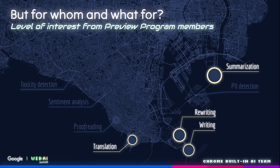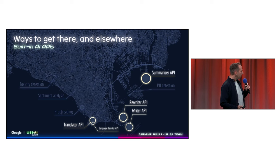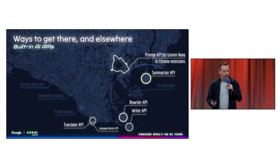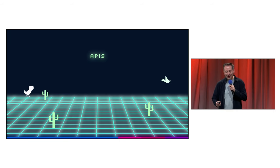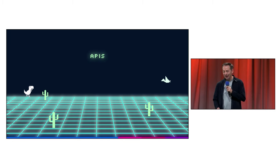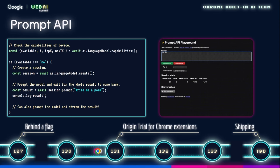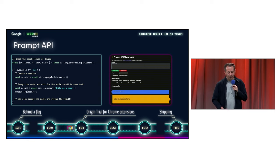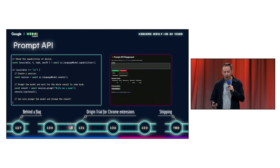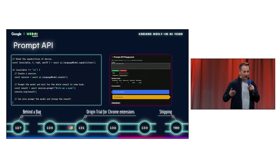It's time to jack into some actual code — I'll give you a sneak peek. First up, the prompt API. This is an API that lets you talk to Gemini Nano — you can send your prompt, get a response, and experiment. This has been available since Chrome 127, and we are launching an origin trial in Chrome 131, starting with Chrome extensions. So pretty soon you will be able to use this API for real with actual users in Chrome extensions.